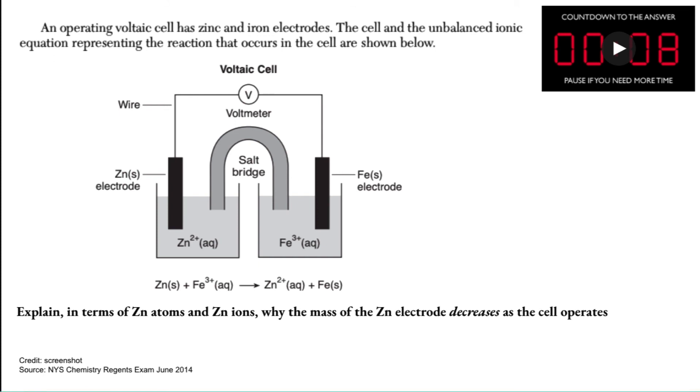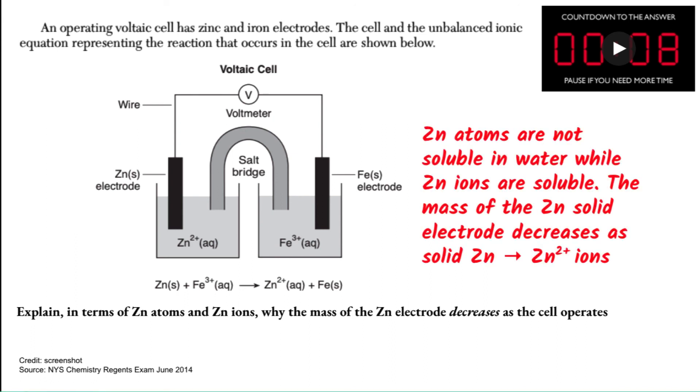Explain in terms of zinc atoms and zinc ions why the mass of the zinc electrode decreases as the cell operates. This is a little bit subtle, but zinc atoms are not soluble in water. They are solid. Notice the sign solid. While zinc ions are soluble. Notice Aq for aqueous. So the mass of solid zinc electrode decreases because as the reaction goes on, solid zinc atoms are becoming zinc ions.